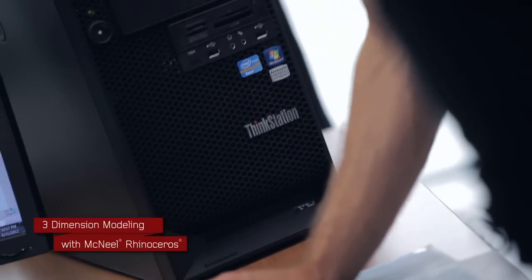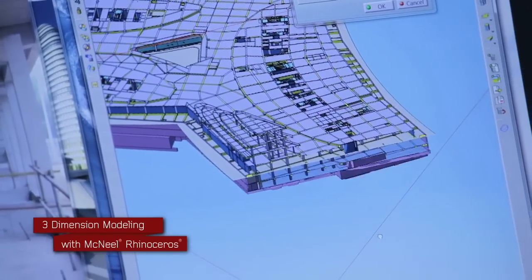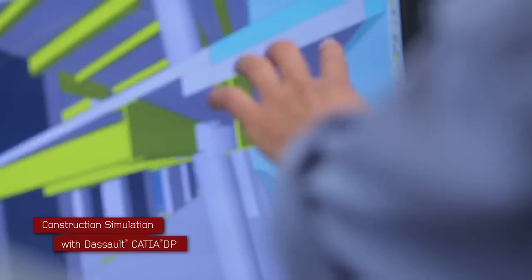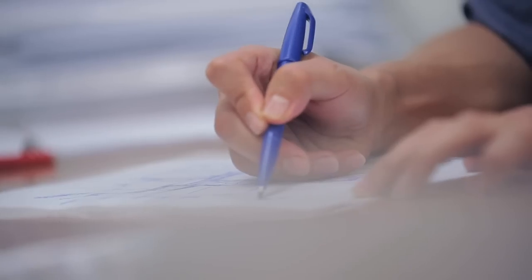Our design process starts with Maya, that's the first part of it, and then we proceed to using Rhino to help develop the design with more detail. And then finally we use Katia DP, and that helps us to put all of the models together.